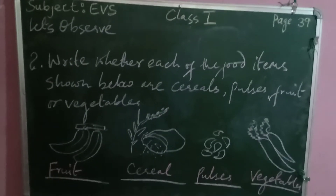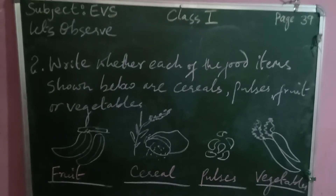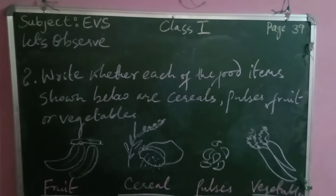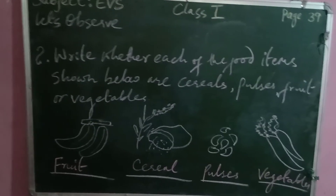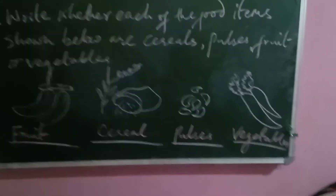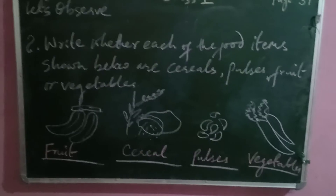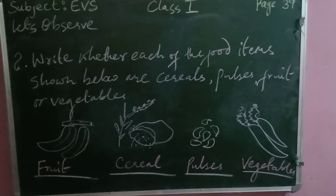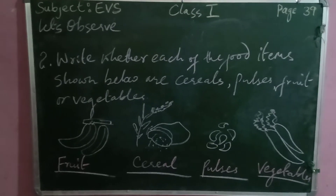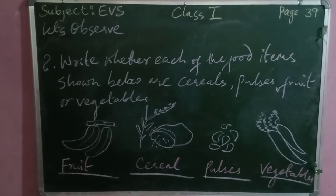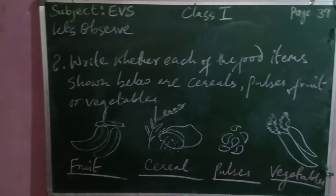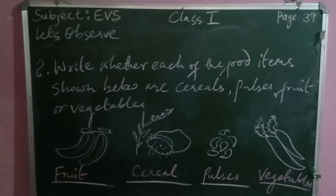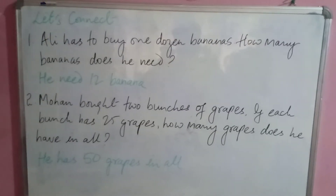Question number two: write whether each food item shown is a cereal, pulse, fruit, or vegetable. There is a picture of bananas — write fruit. There is a picture of a sack of rice — write cereals. There is a picture of kidney beans — write pulses. There is a picture of radish — write vegetables.